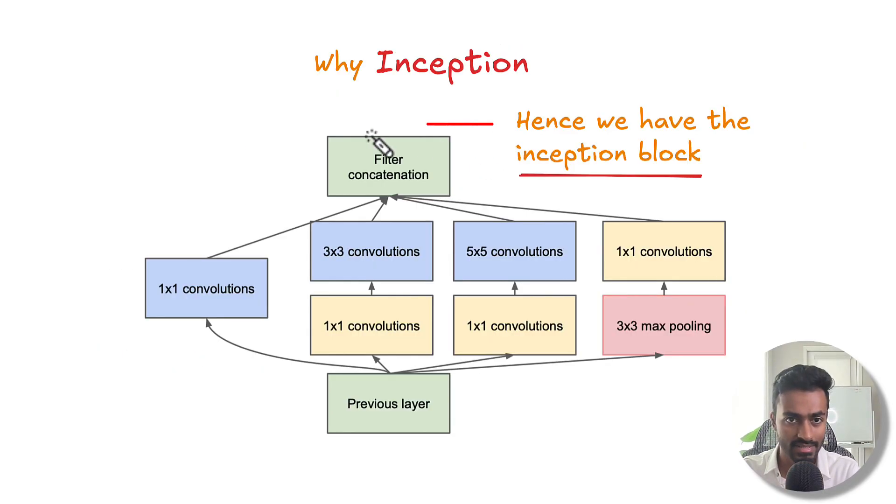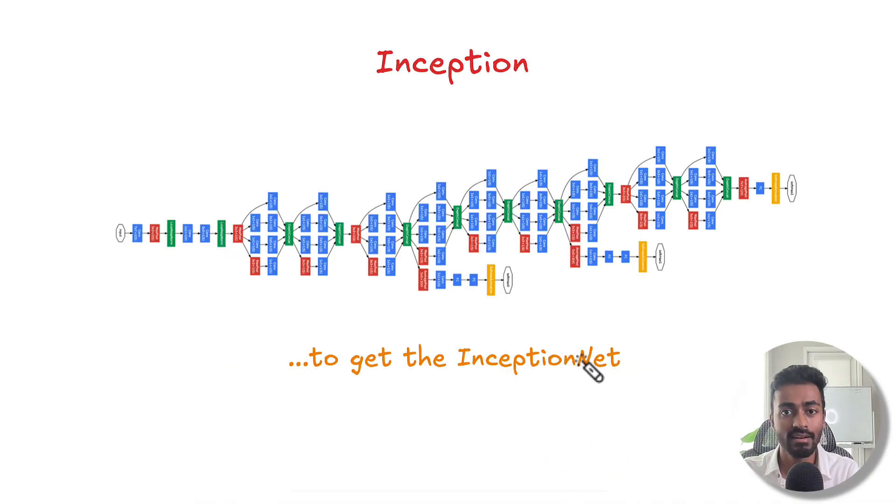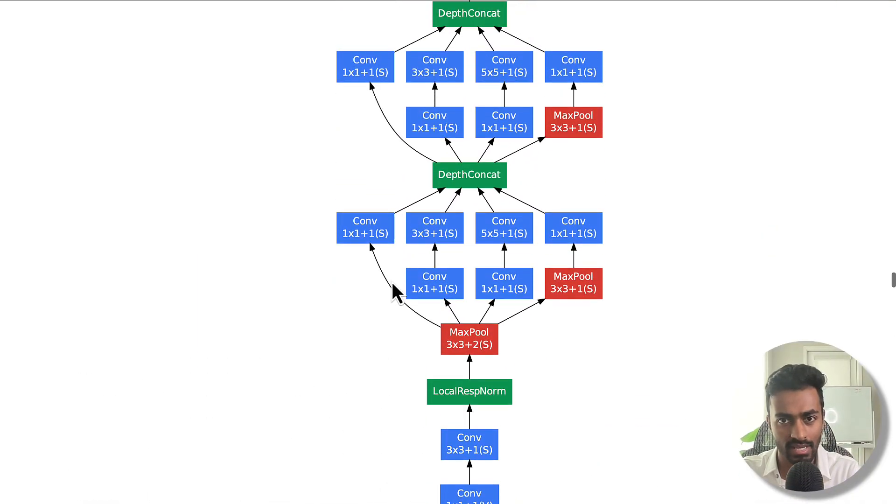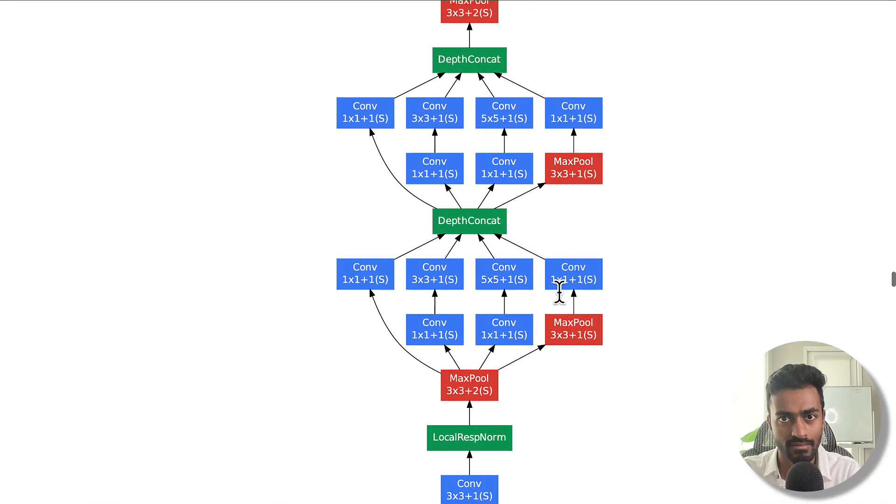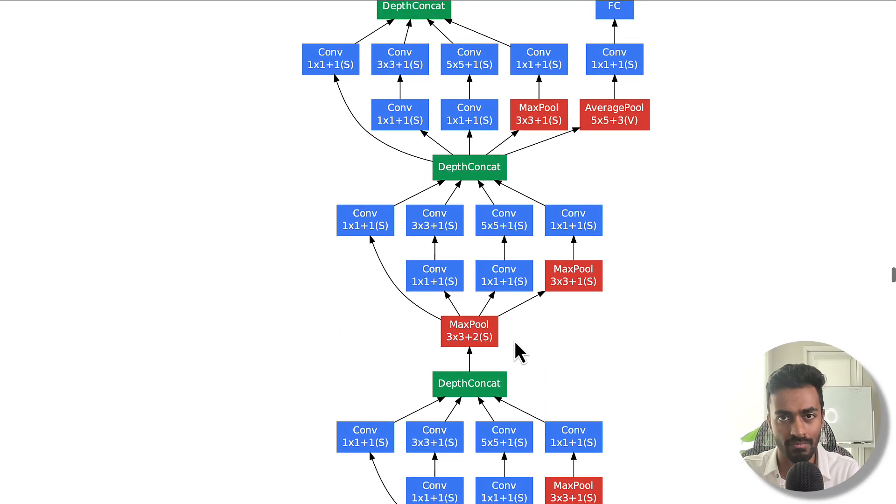And this right here is exactly what we call the inception block. All we need to do now is we concatenate these blocks, one after the other, and we get the inception network. This is what you see over here, we have one inception block, another inception block, another inception block.